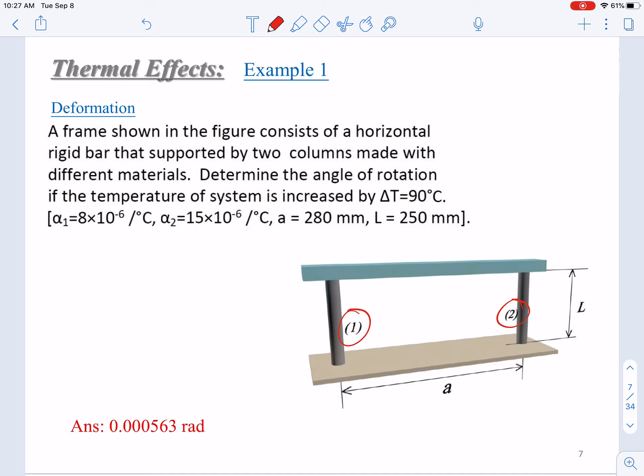These two columns are made with different materials. Column 1 has a coefficient of thermal expansion α₁=8×10⁻⁶ per °C, and column 2 has α₂=15×10⁻⁶ per °C, which is larger than column 1.